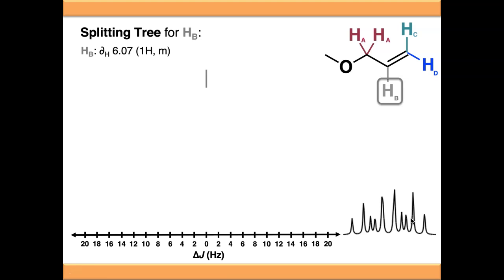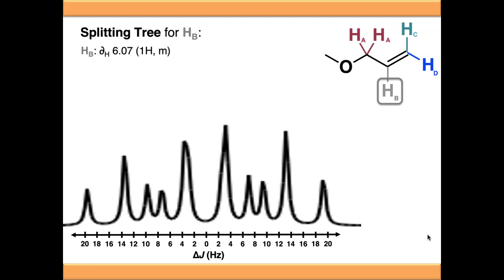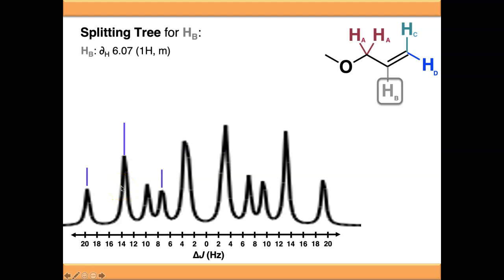Let's move on to a really complicated looking example and see how we can reverse engineer a signal using splitting trees. This signal for HB looks fairly horrendous - you wouldn't necessarily be able to tell off the top of your head what that signal is. What we're going to look for in this signal is any kind of repeat patterns and anywhere that there is a repeat unit. If you look down the axis, you can see that the signal is symmetrical on both sides - everything on one side is reflected on the other - which is usually a good sign that the signal is going to be interpretable.